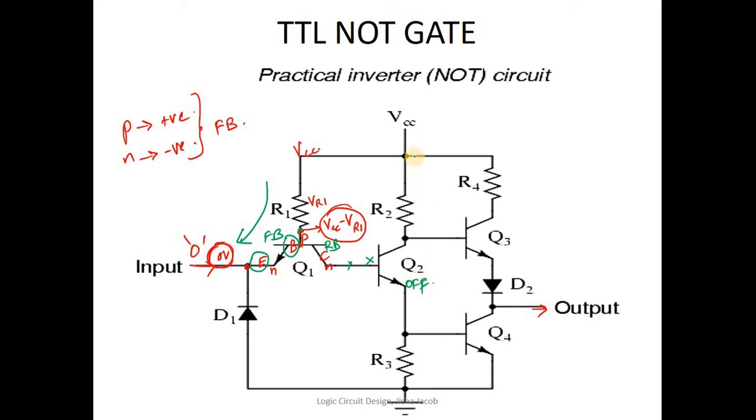Now if Q2 is off, the current that flows from VCC, the positive supply voltage, sees that there is a block here because Q2 is off. It acts as an open switch, so the current will prefer to flow into the base of Q3, turning Q3 on.